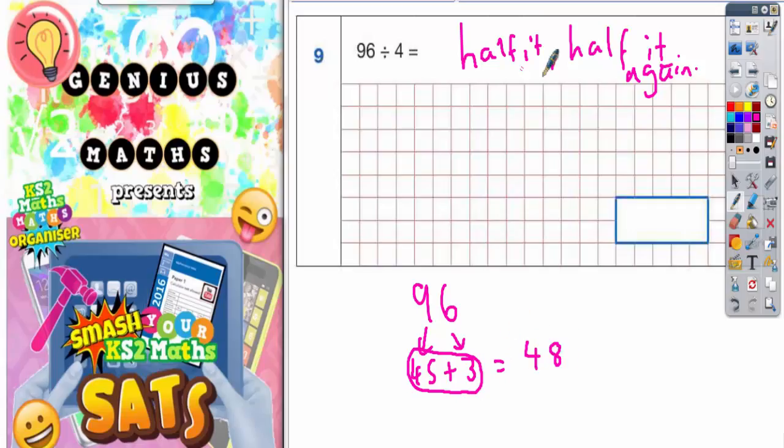Now, that's halving it once, you'd have to half it again. So half of 40 would be 20 and half of 8 would be 4. So half of 48 would be the 20 and the 4 together, which would make 24. So it looks as though your final answer is 24.